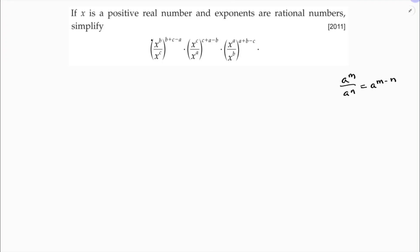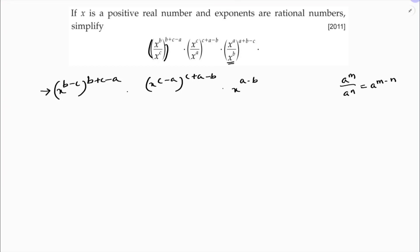This step will become x power b minus c, whole power b plus c minus a, into x power c minus a, whole power c plus a minus b, into x power a minus b, whole power a plus b minus c.